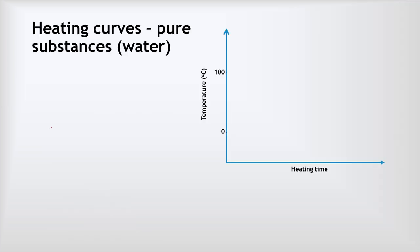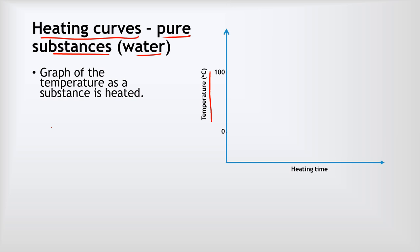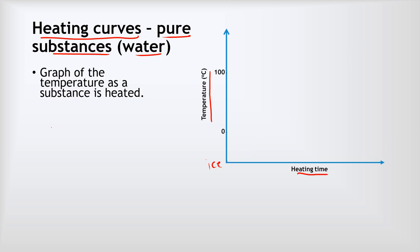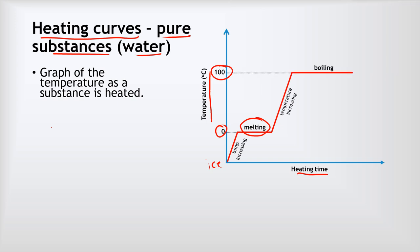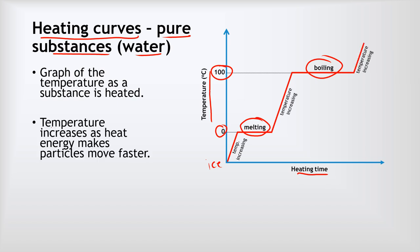Now we're going to look at the heating curve for a pure substance — in this case water. A heating curve is a graph showing what happens to the temperature over time as you heat a substance. Starting with ice, you might expect a straight line, but it doesn't do that. The temperature increases until the melting point of 0°C, then stays flat whilst it's melting. Only once all the ice is fully melted does the temperature rise again, then levels out again at 100°C whilst the water boils.